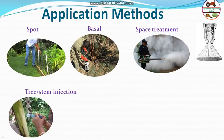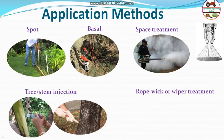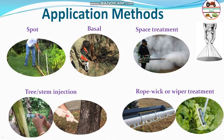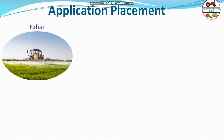Rope wick or wiper treatment is used for sensitive green vegetables where chemicals must not enter the food chain — the chemical is gently wiped onto leaves via a wick or rope arrangement. Placement methods include foliar application, where sprays are deposited on the leaves or foliage of the crop.